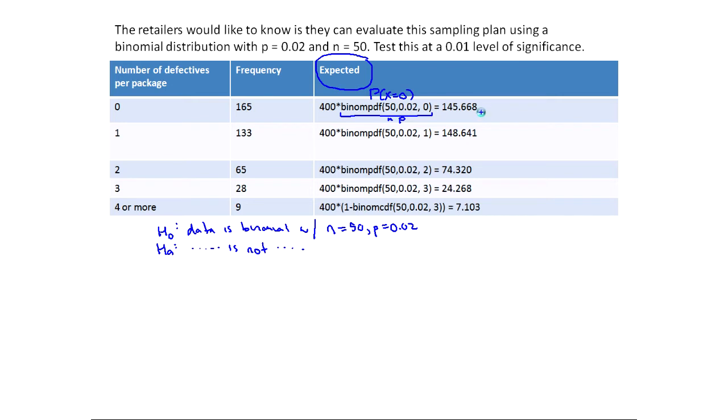And then for X equals one, I did the same thing. This is probably X equals one to get the percentage, and then times 400. Probably X equals two. Probably X equals three. And then this last one, four or more.